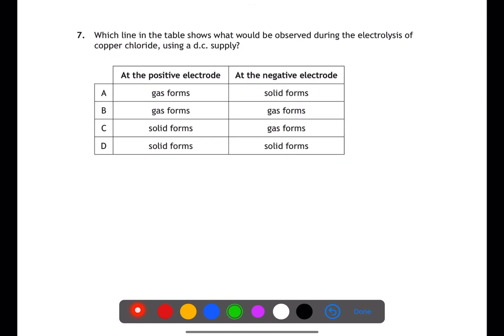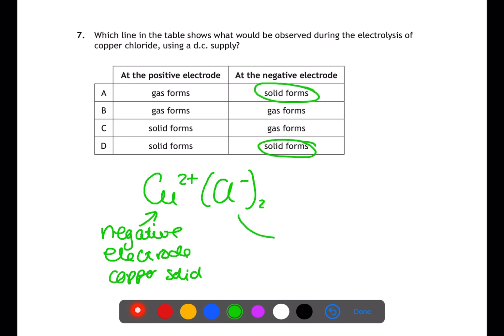To answer question seven, you need to understand the charges in the ionic compound copper chloride. You have Cu2+ and then two Cl- ions. The Cu2+ will be attracted to the negative electrode and form as copper solid on the negative electrode. Chlorine is a negative ion and is attracted to the positive electrode where it forms chlorine gas. Therefore, the answer is A.